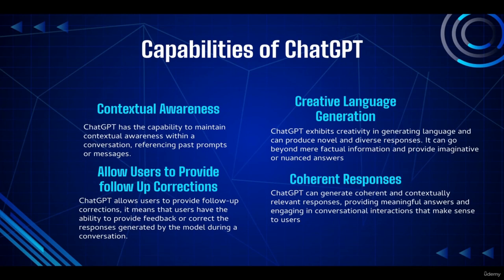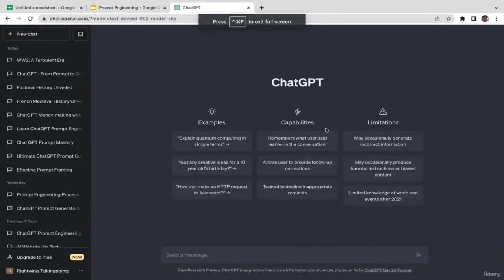In this video we're going to talk about the capabilities of ChatGPT. It's very important to know and understand what ChatGPT is capable of so you can utilize this AI tool to its fullest extent. The first capability is contextual awareness — ChatGPT can maintain contextual awareness within a conversation, referencing past prompts or messages. As listed in a new chat, the first feature is 'remember what users said earlier in the conversation.'